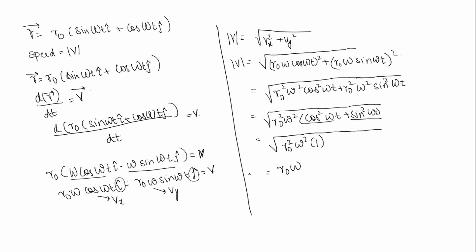From this we can understand that the magnitude of velocity, that is speed, is constant throughout the journey of the particle. So the option stating speed is constant is correct.